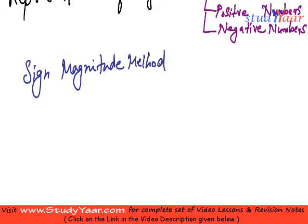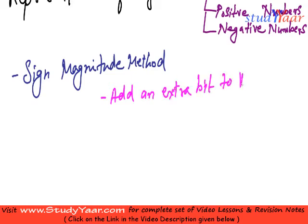In the sign magnitude method, what we do is we add an extra bit to the left to represent the sign.